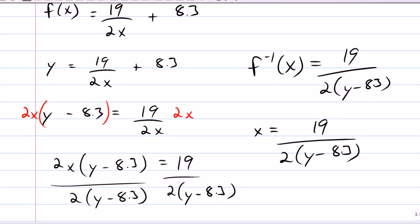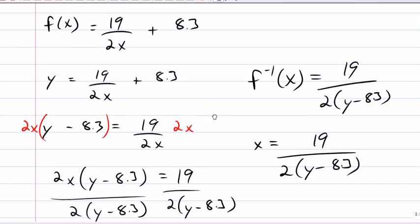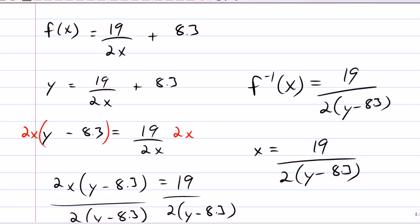So, you can check it. We'll do a quick check, okay? If you plug 1 into F of X, F of 1 equals 19 halves plus 8.3. Okay, if I grab my calculator, 19 halves plus 8.3 is 17.8.